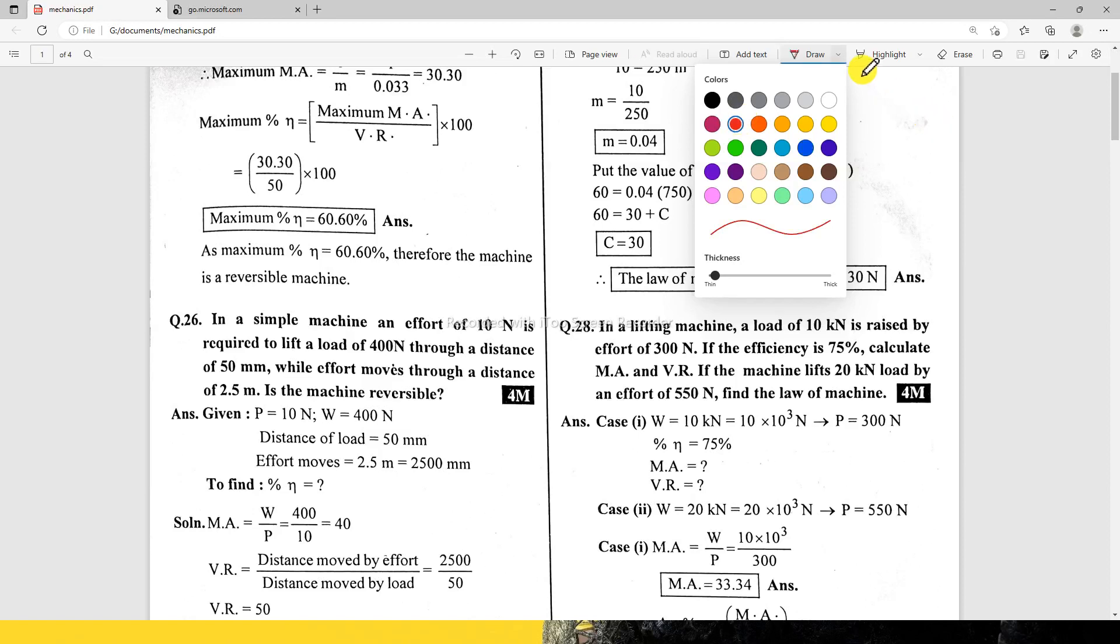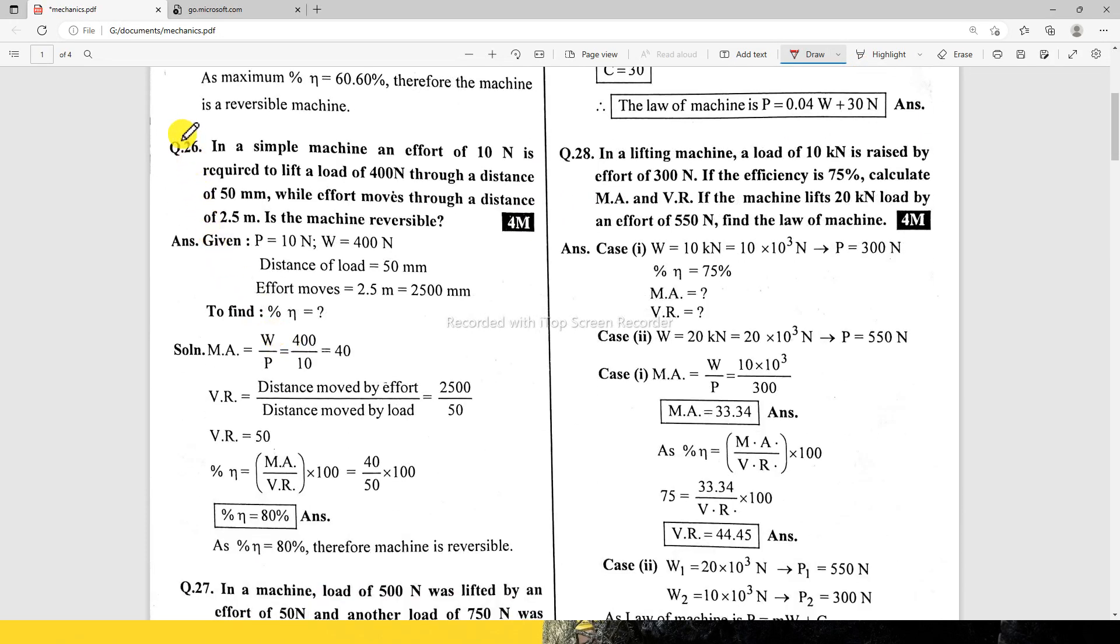The engineering mechanics based which is numerical. We are going to study them, so let's start without any time wasted. First numerical, there is number 26, a basic numerical asking for 4 marks in university exams.